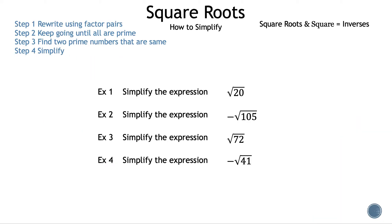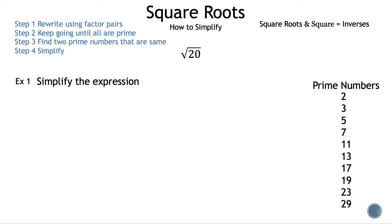Here are the examples we're going to be discussing in today's video. Let's take a closer look at example 1. The steps are: Step 1, rewrite using factor pairs. Step 2, keep going until all factors are prime. Step 3, find two prime numbers that are the same. Step 4, simplify. The question: simplify the expression square root of 20.